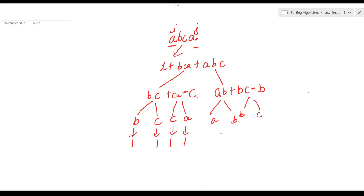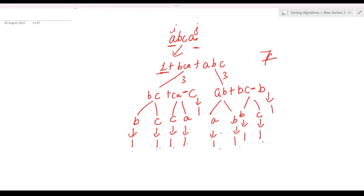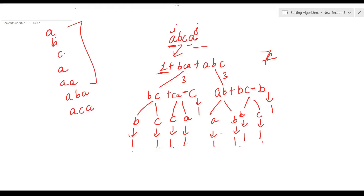From the base cases, we get ones for each individual character. Counting up: 1+1=2, then 1,2,3,4 — minus 1 gives 3. Then 1,2,3,4 — minus 1 gives 3. Adding these up: 3+3=6, plus the 1 from the top-level match = 7. So for 'abca' we get 7 palindromic subsequences: a, b, c, a (individual), aa, aba, aca — that's seven.